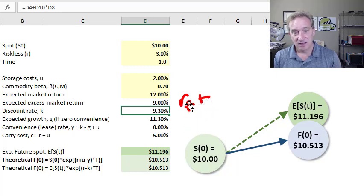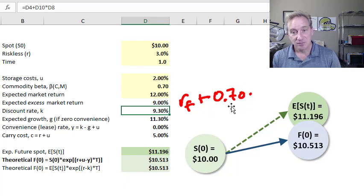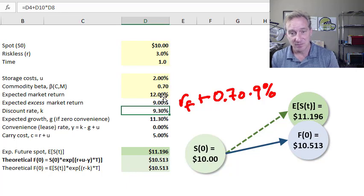Plus the beta of 0.7 times, that's the beta, that's the sensitivity with respect to the common factor, which is the market's excess return of 9%. So the application of the capital asset pricing model, given the beta and my other assumptions, tells us that the discount rate is 9.3%.